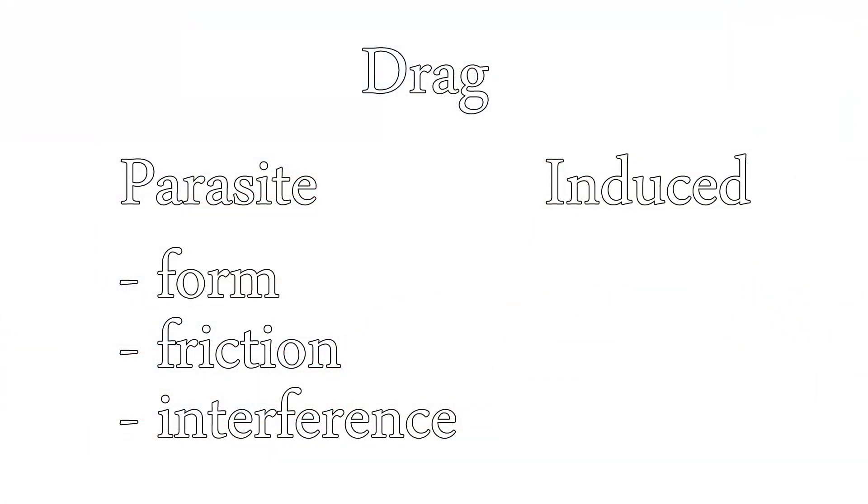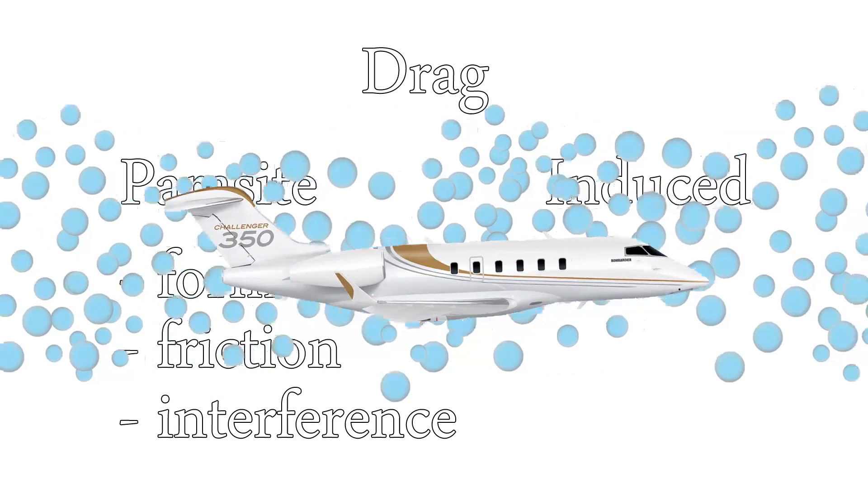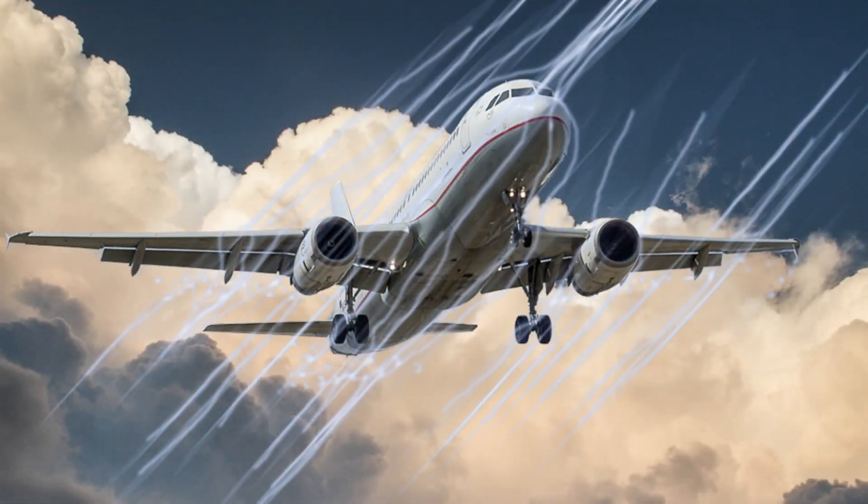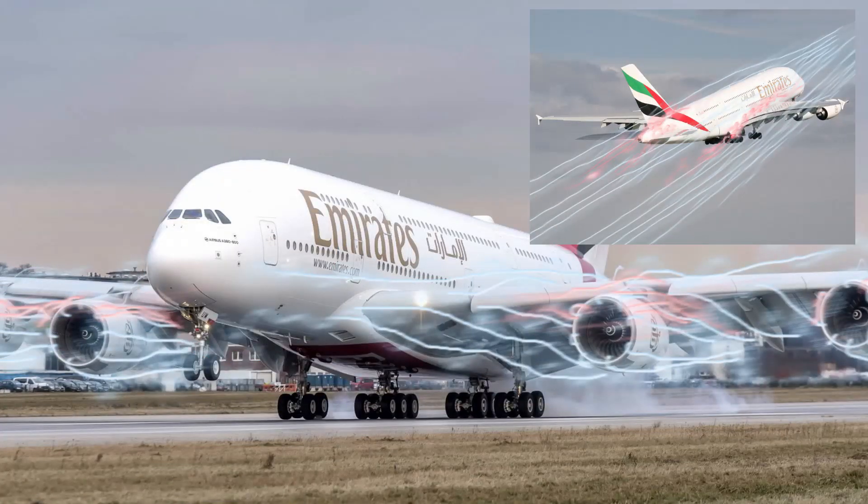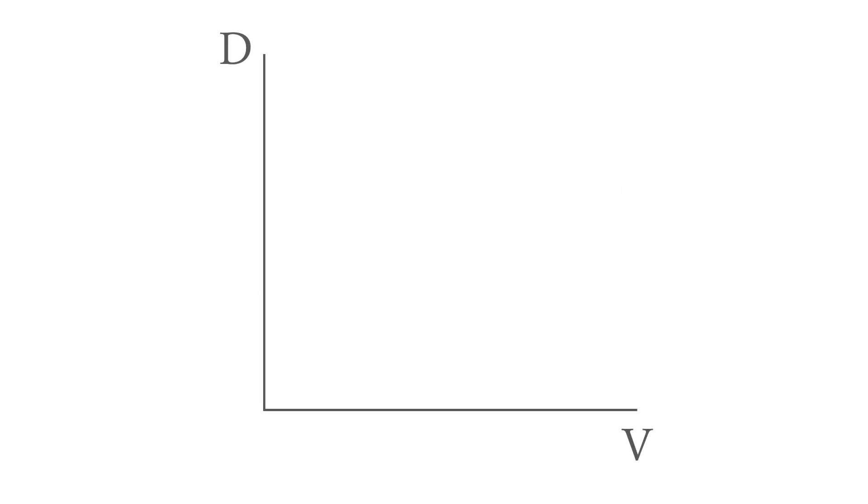These were the three forms of parasite drag. In each one of them there is an interaction between the air and the airplane and the amount of drag gets higher as the relative movement between them gets higher. The greater the speed, the greater the amount of displaced air in the form drag, the more molecules scrape along the surface of the skin in friction drag and the greater amount of air molecules collide in interference drag. If we add up all these drag forms, we can plot it on a velocity drag diagram and we would have something like this. Once again, in parasite drag greater velocity creates greater drag.